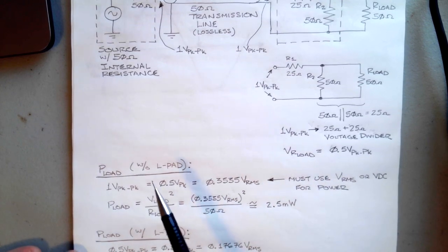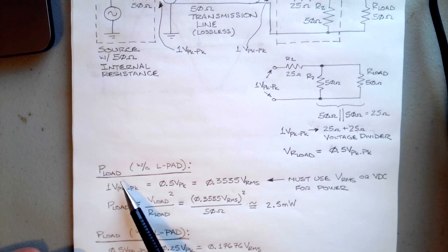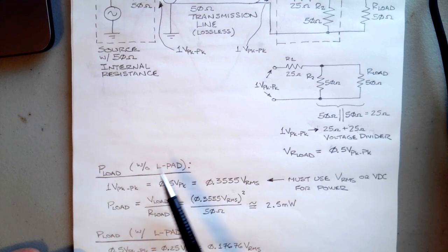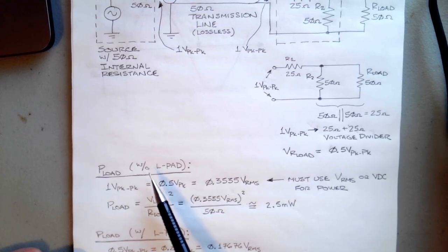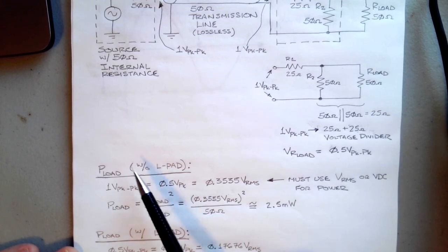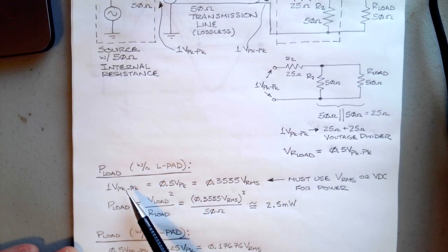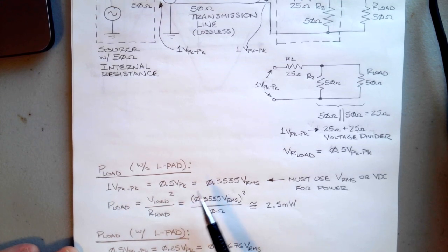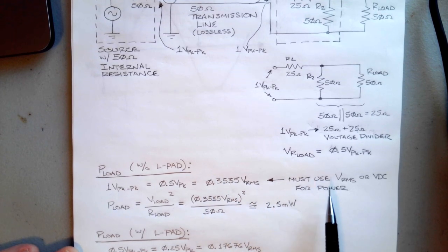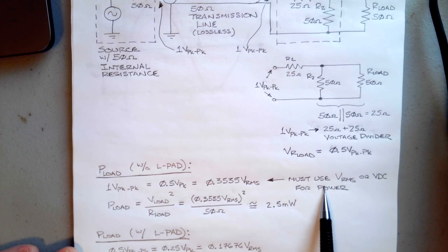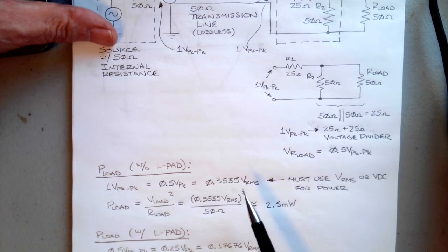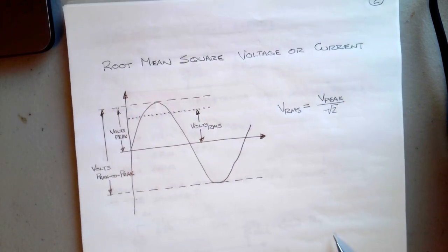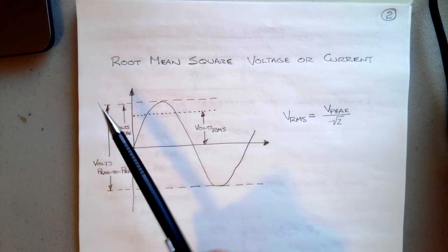We would like to analyze the power delivered to the load. We could analyze the power delivered to the load without the L-pad. Power to load without the L-pad would be the one volt peak to peak—that's a half a volt peak, and that's 0.3535 volts RMS. We have to use RMS for power calculations.